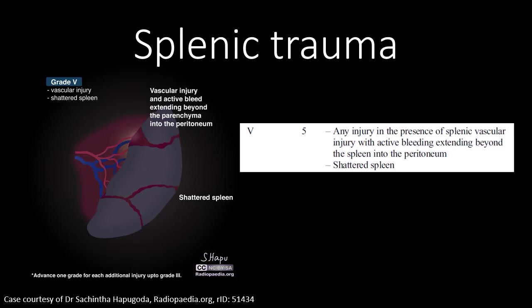Any bleeding from a vascular injury that extends into the peritoneal cavity — intraperitoneal hemorrhage — is considered a grade 5 injury. It will often require angiography or surgery depending on the stability of the patient. Another type of grade 5 injury is a shattered spleen, in which there is devascularization and multiple regions of laceration extending throughout the spleen. This can often be treated with angiography if the patient is hemodynamically stable, but if the patient cannot maintain stability after resuscitation, surgery may be required.